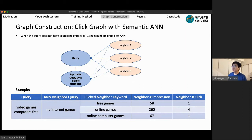So we use ANN to find a semantically meaningful and very similar query, which is no internet games. And for this query, we do find three neighbor keywords that are free game, online games, online computer games. And we found that using ANN, we can find neighbors that are also very relevant to the original query, as can be shown from this example.